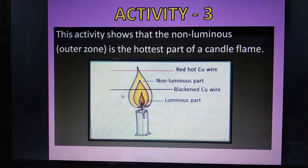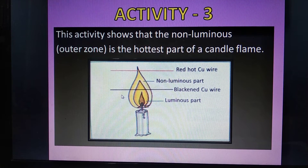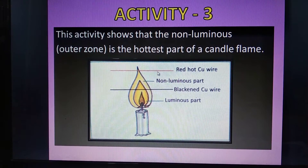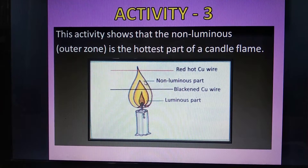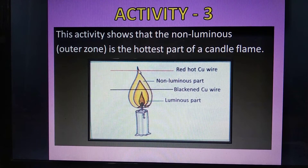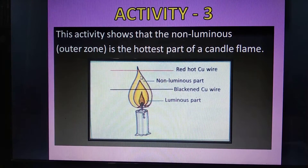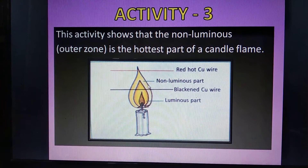We will see that the part of the copper wire which is in the outermost zone of the flame becomes red hot. This tells us that the outermost non-luminous zone of the flame has a high temperature. In other words, the non-luminous zone or outermost zone of a flame is the hottest part of a flame.